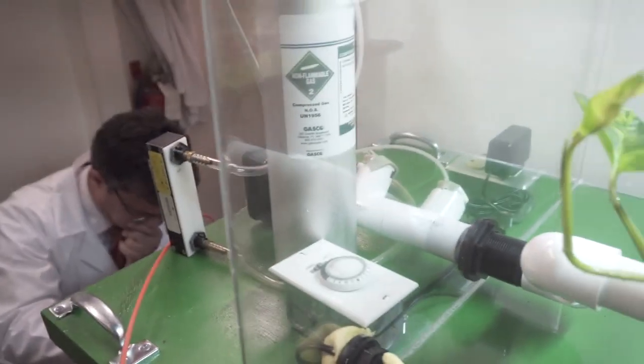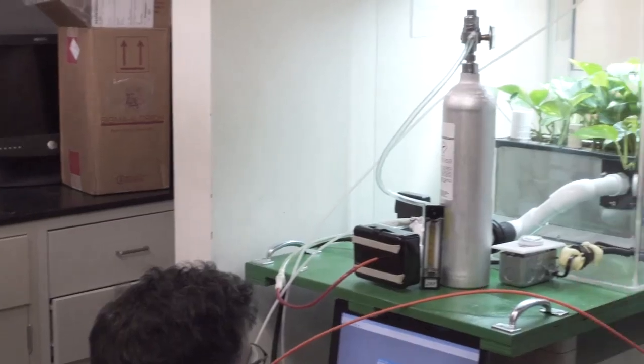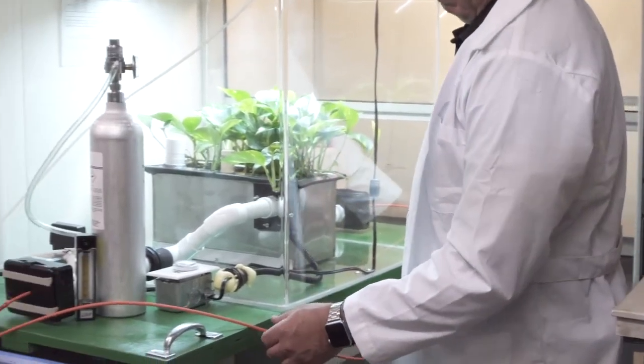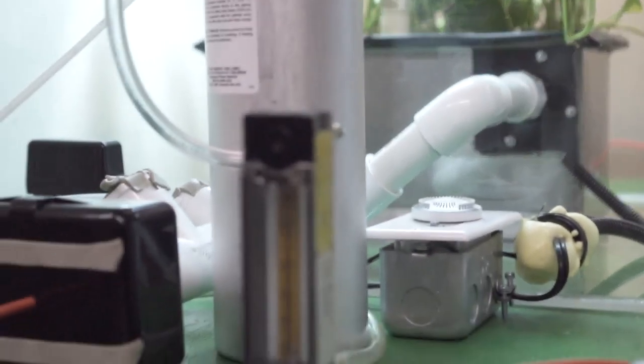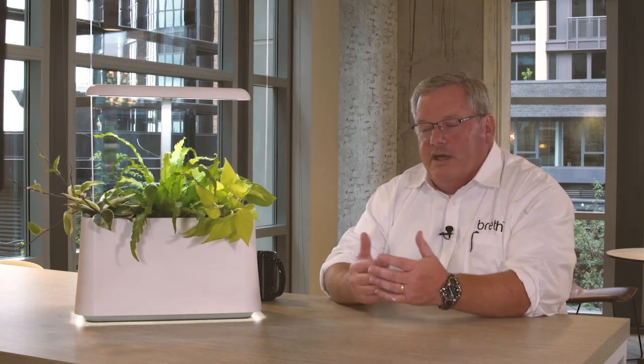We built a glass chamber and stuck the unit inside this completely sealed chamber. We had an intake to bring in formaldehyde for the first test at a very high rate. It goes directly into the BREATHE unit, into the fan, which is forced through the plants, and then we exited the air. We measured the intake and the outtake readings.